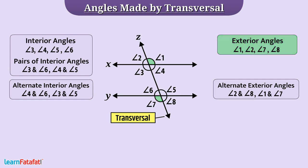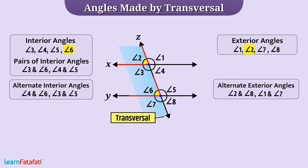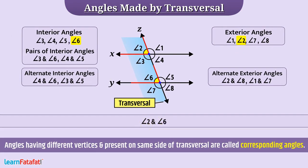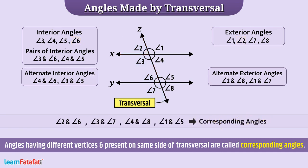Angle 2 and angle 6 have different vertices and both are present on the same side of the transversal. While angle 2 is an exterior angle and angle 6 is an interior angle, they are in corresponding positions. Such angles are called corresponding angles. These other pairs are also corresponding angles.